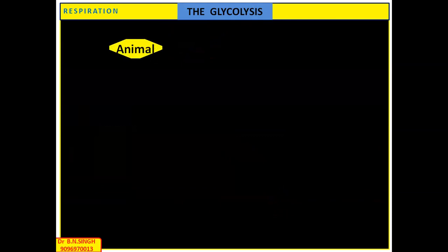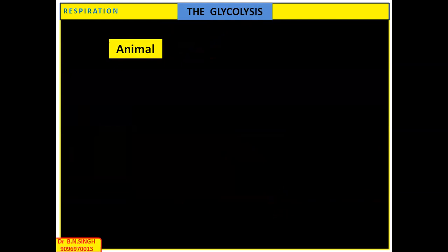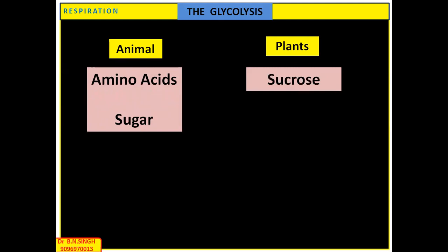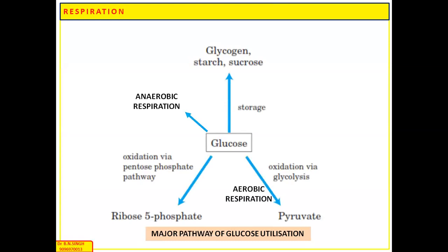In the case of plants and animals, the substrate utilized may differ. But the basic substance required for glycolysis is the six-carbon compound glucose. Different amino acids and different types of sugars present in animals can enter glycolysis in the form of different intermediates. In plants, the transporting sugar is sucrose, and this sucrose when broken down produces glucose, which becomes the fundamental substrate for glycolysis.